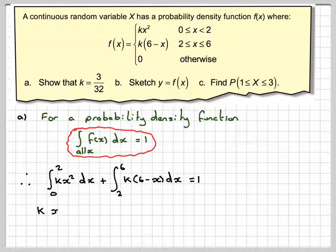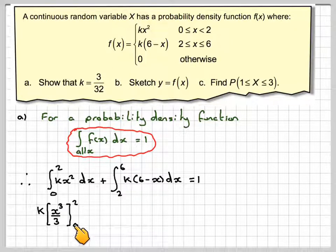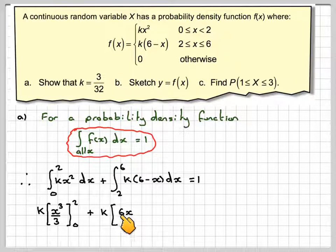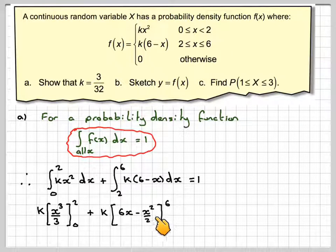Then we integrate, so we're going to get kx³/3, between the limits now becomes 0 and 2, plus k—the k is just a constant so it can come out—6x for them 6 and then minus x²/2 between 2 and 6, and that has to be equal to 1.